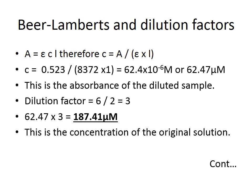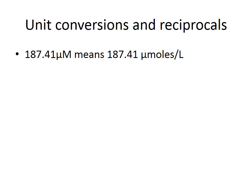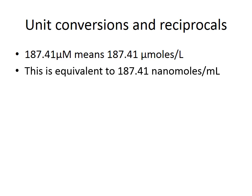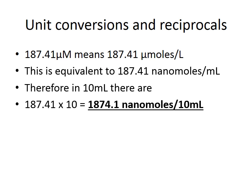187.41 micromolar means 187.41 micromoles per litre. To calculate how many nanomoles were in the original 10 mL sample, convert to nanomoles per millilitre by dividing both sides by 1000: 187.41 micromoles/L = 187.41 nanomoles/mL. Since the original sample was 10 mL, multiply the concentration by the volume: 187.41 × 10 = 1874.1 nanomoles in the original 10 mL adenosine solution.